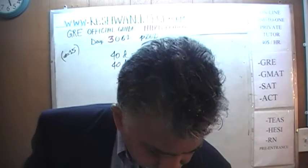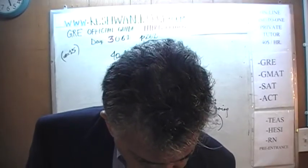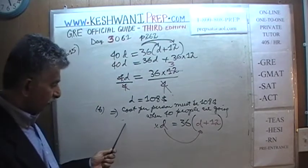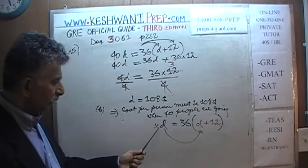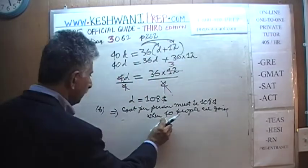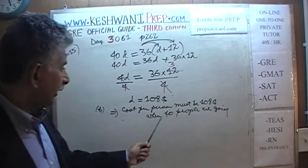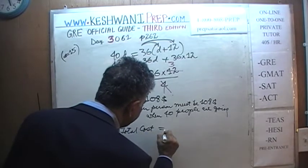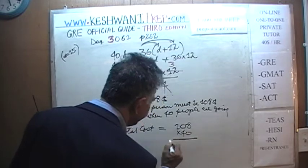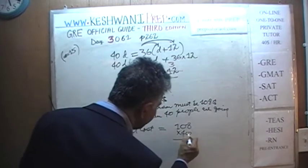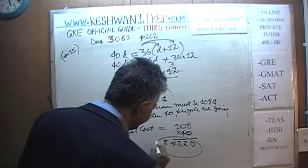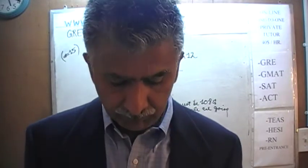Is that what the question was asking? Not entirely — the question has two parts. Part B asks for cost per person, which we just answered: $108. Part A asks for the total cost, which is simply 40 times D. We now know D, so the total cost equals 40 times 108. Working that out: 4 times 8 is 32, carry the 3, 4 times 1 is 4 plus 3 is 7 — so the total cost is $4,320 to charter this aircraft when 40 people were going.